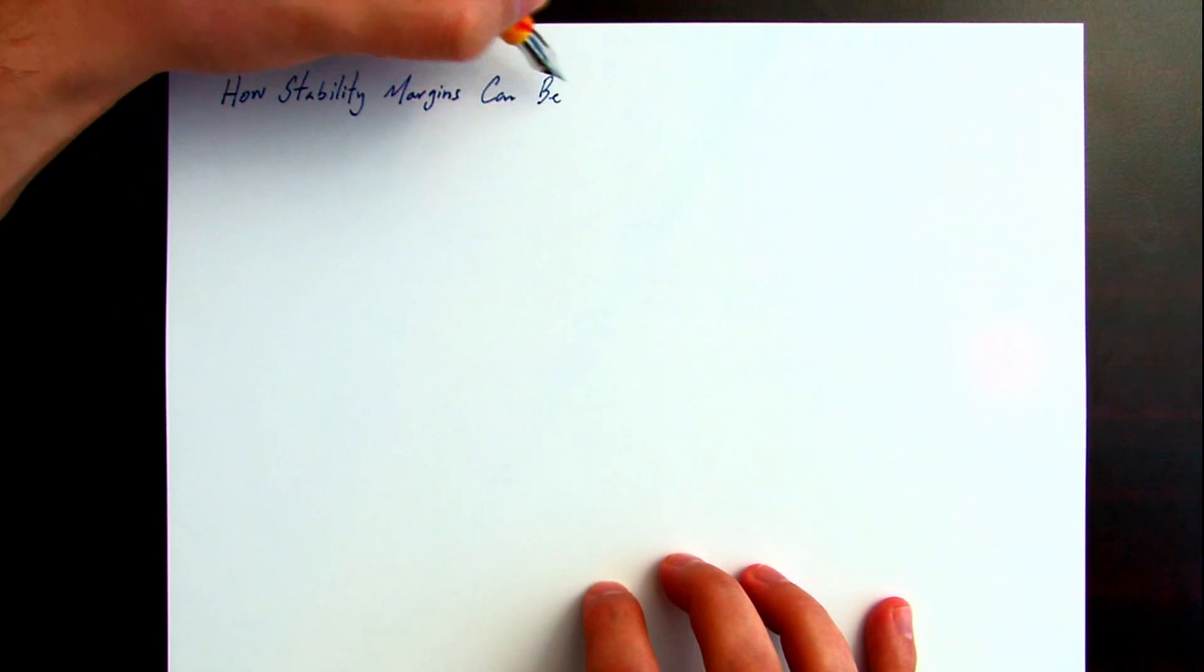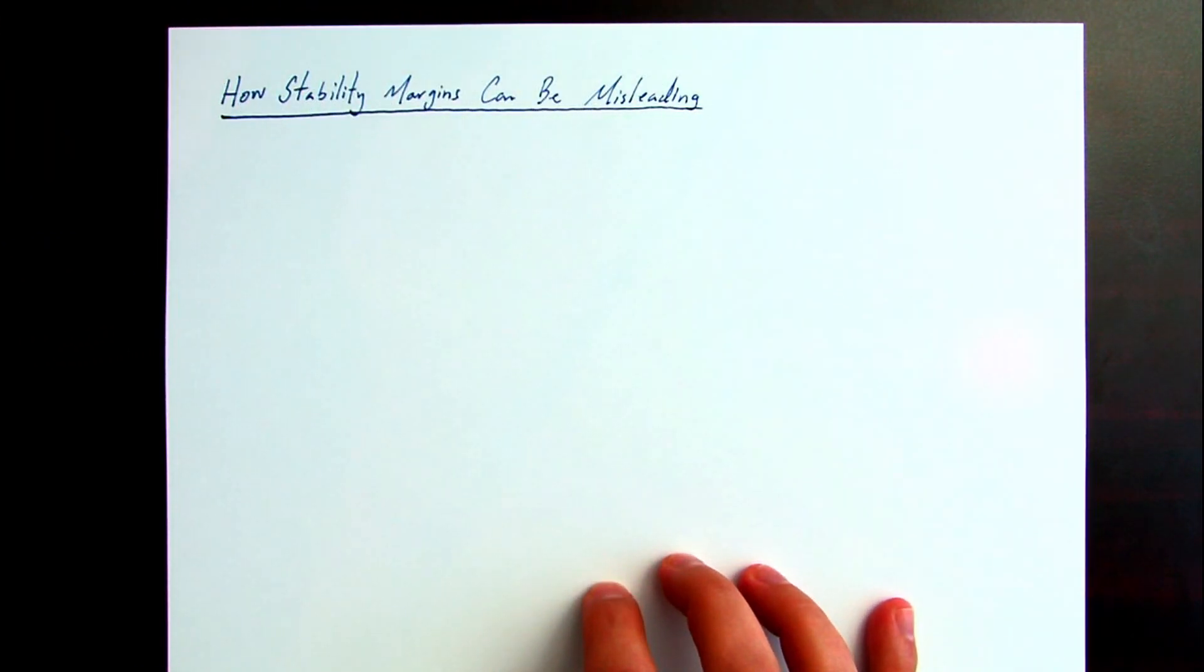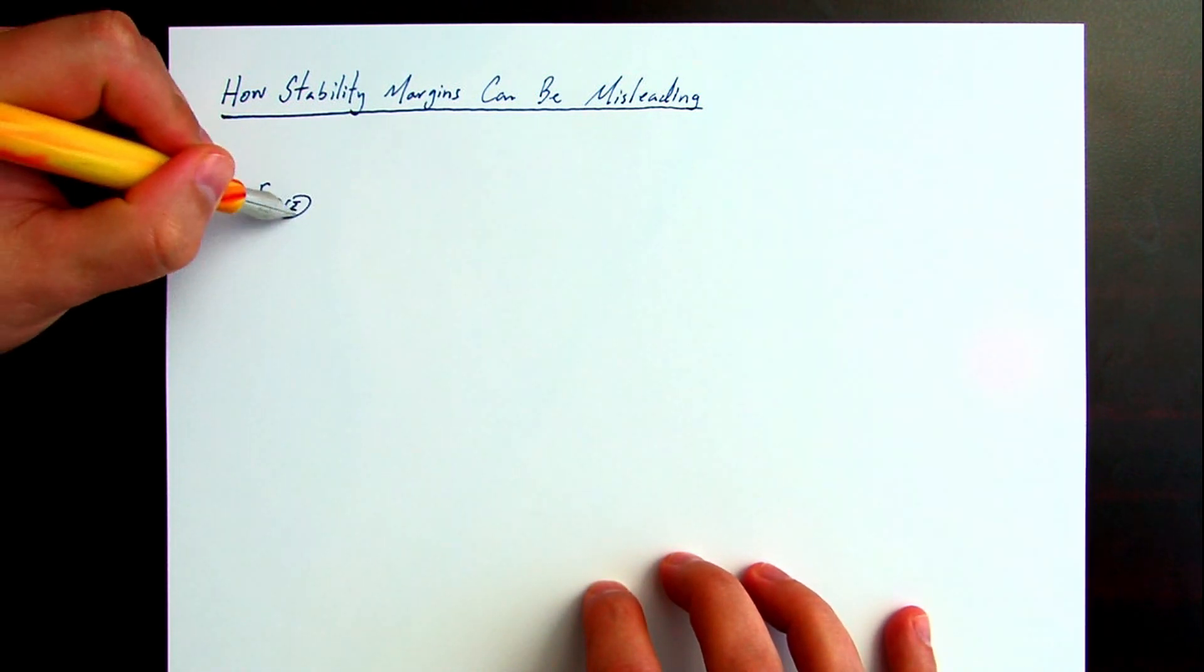It's very possible that stability margins indicate robustness, but the closed loop system is nearly unstable. This video covers one way in how stability margins can be misleading.